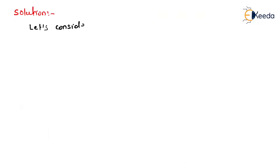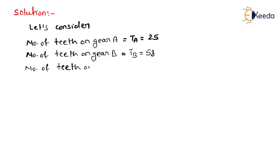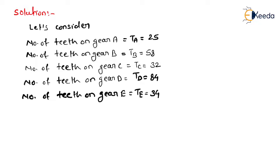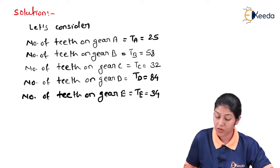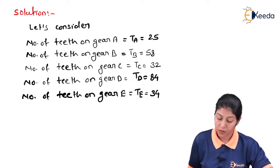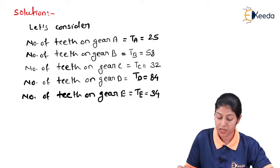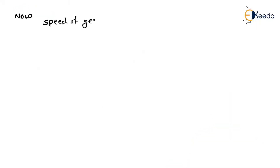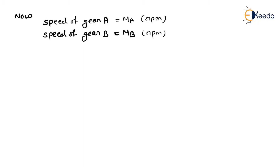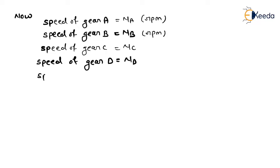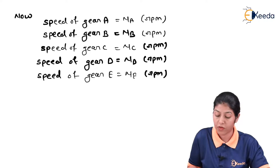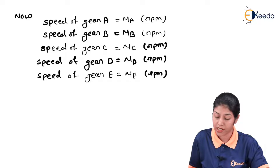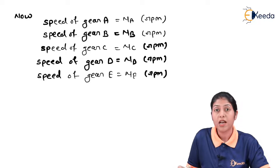Let's start the solution. Number of teeth: TA = 25, TB = 58, TC = 32, TD = 84, TE = 34. Let us consider the speed of each gear: speed of gear A is NA, gear B is NB, gear C is NC, gear D is ND, and gear E is NE, all in RPM.